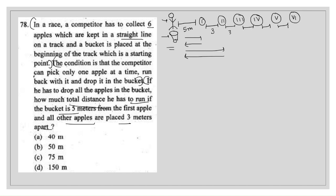This can be approached as an arithmetic progression, but let's calculate directly. For the first apple, the distance traveled is 5 + 5 = 10 meters. For the second apple it is 8 + 8 = 16 meters. For the third apple it is 11 + 11 = 22 meters. For the fourth apple it is 14 + 14 = 28 meters. For the fifth apple it is 17 + 17 = 34 meters.